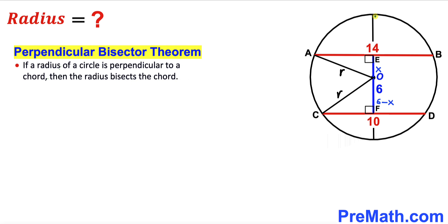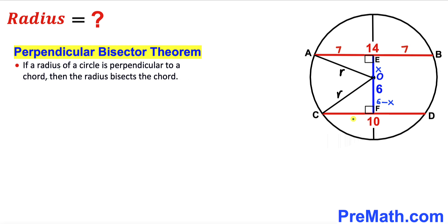In our case, this radius is perpendicular to chord AB. So according to this theorem, segment AE is going to be equal to segment EB. Since the total length of AB is 14, segment AE is 7 units and segment EB is 7 units as well. Likewise, this radius bisects chord CD, so segment CF equals segment FD. Since chord CD is 10, segment CF is 5 units and segment FD is 5 units as well.